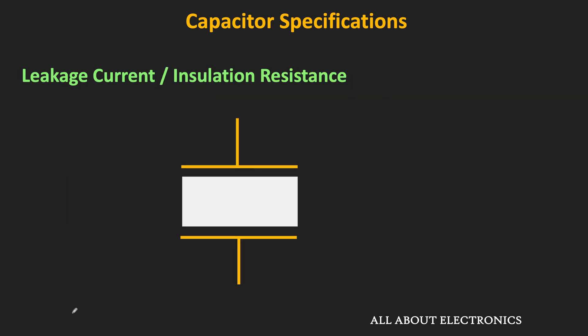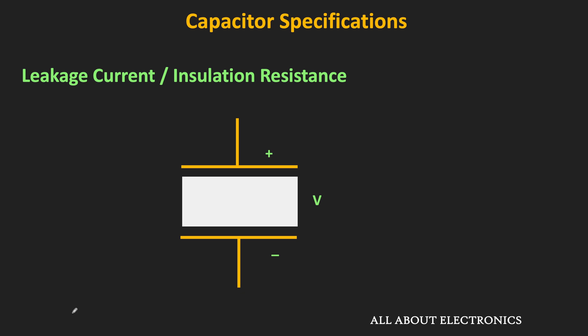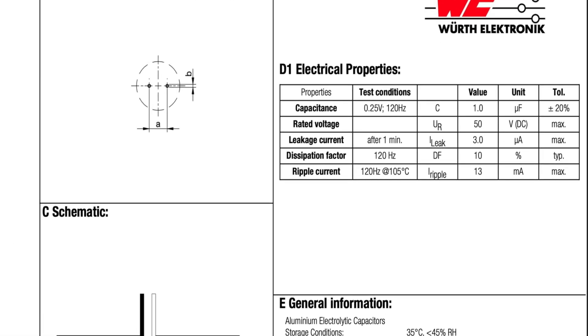The next important specification is the leakage current or insulation resistance of the capacitor. The dielectric used in the capacitor is not a perfect insulator, so some leakage current will flow through it. If the capacitor is charged to a certain voltage, then over time, due to this leakage current, there will be a drop in voltage across the capacitor. In the datasheet, the time after which the leakage current is measured is usually mentioned, because after application of voltage, the leakage current reduces with time and becomes fairly constant after a certain period.